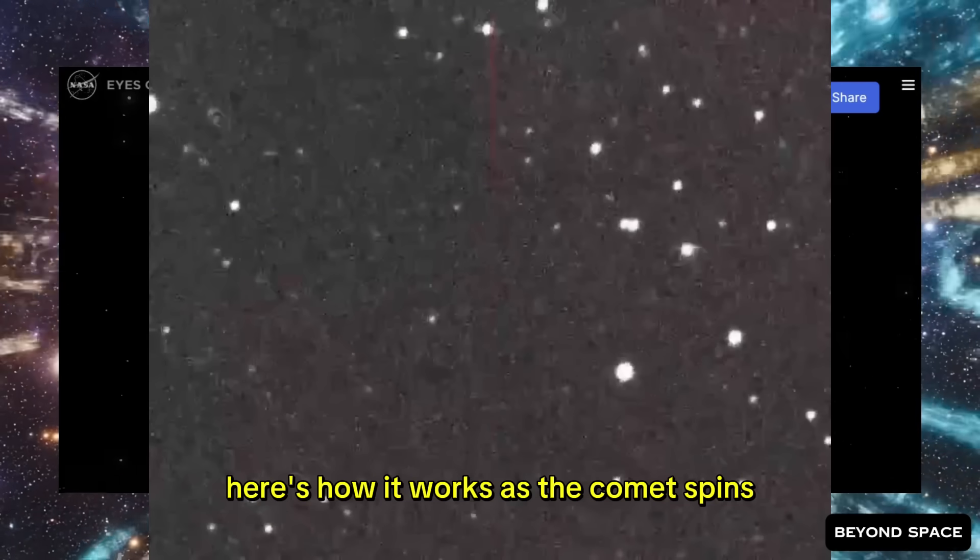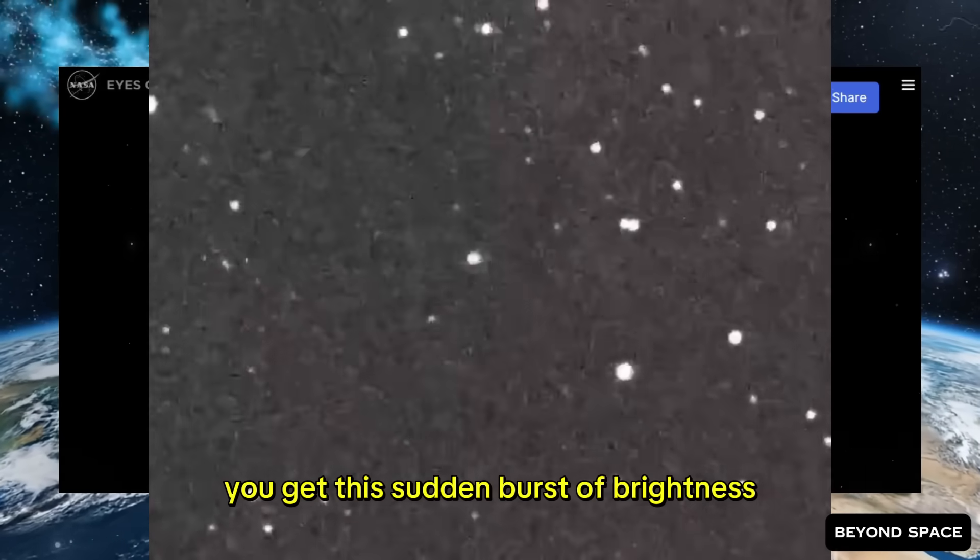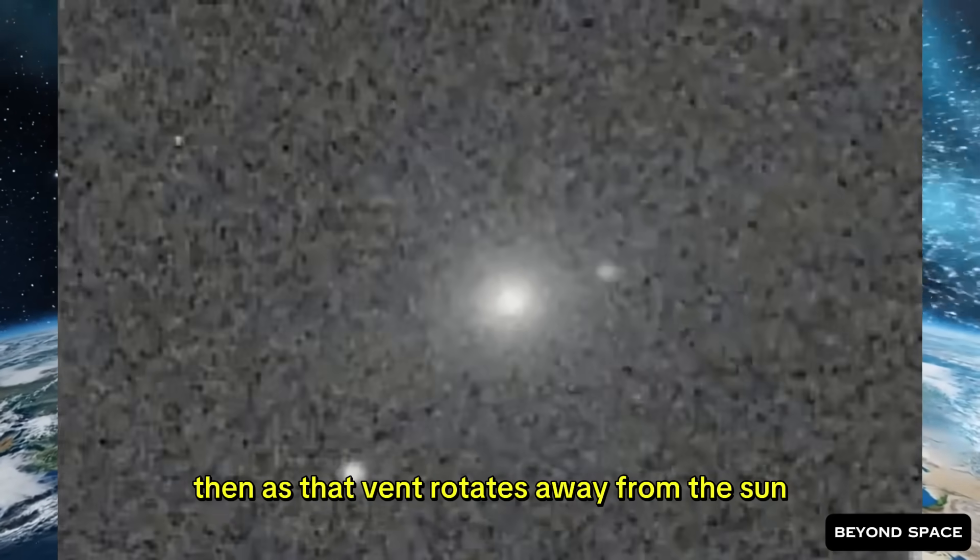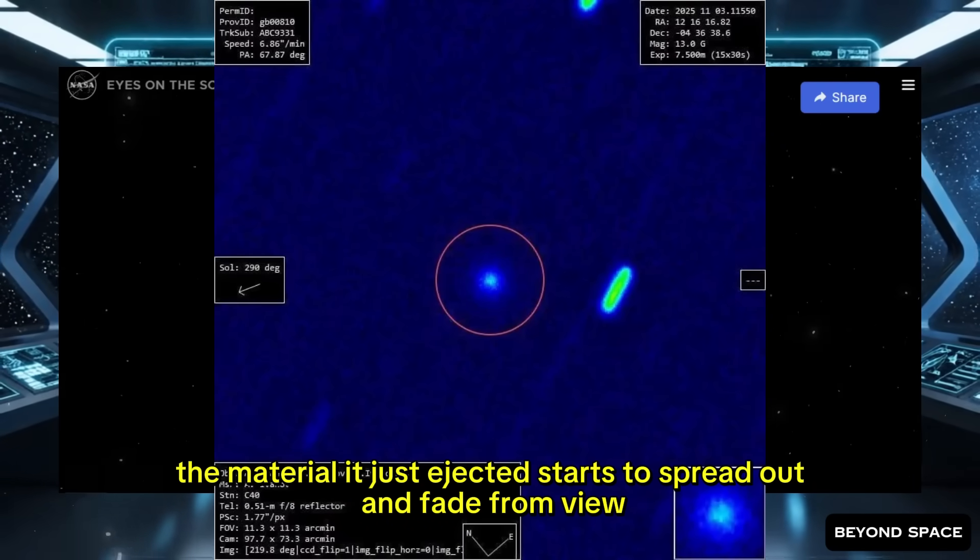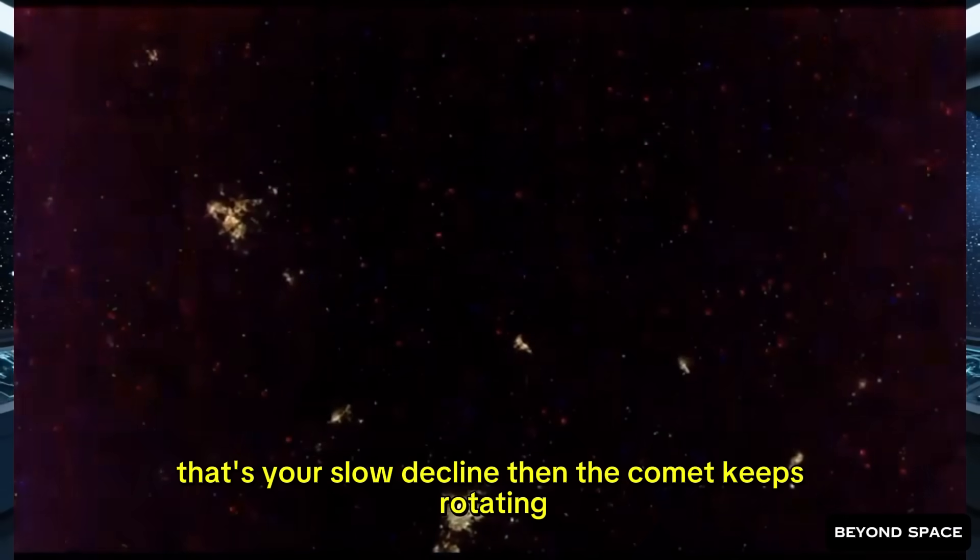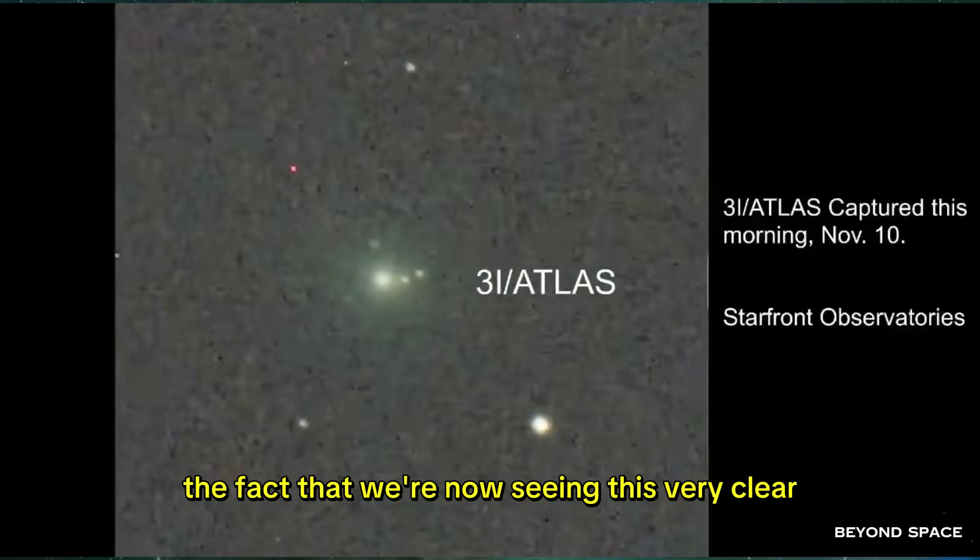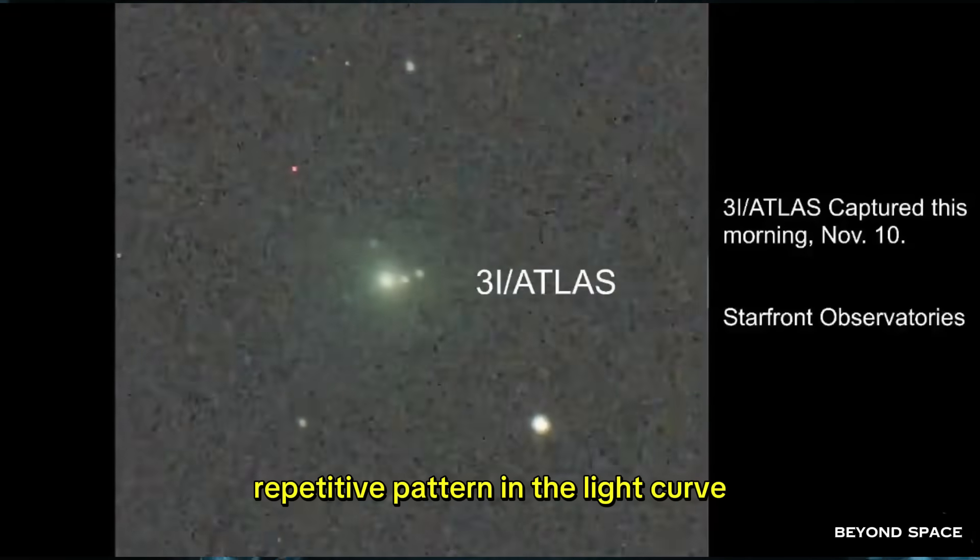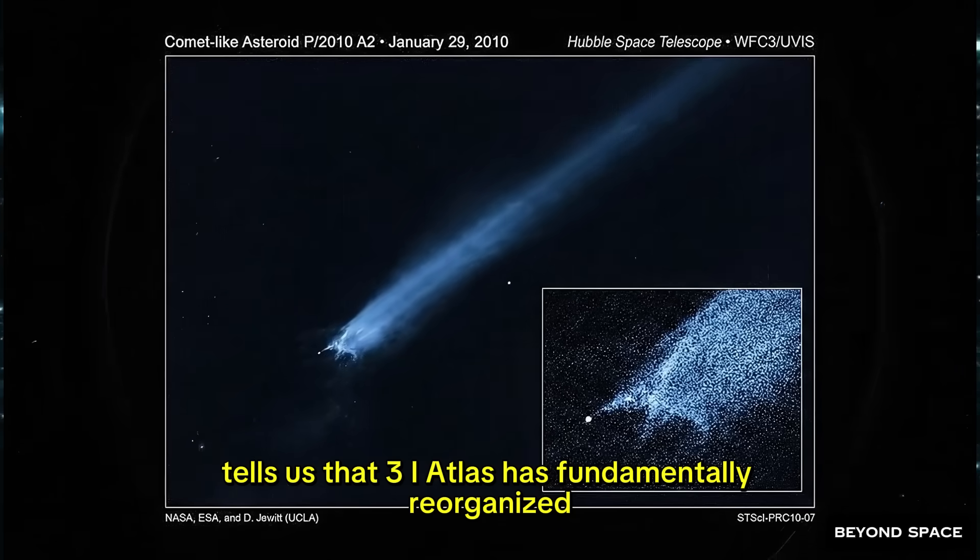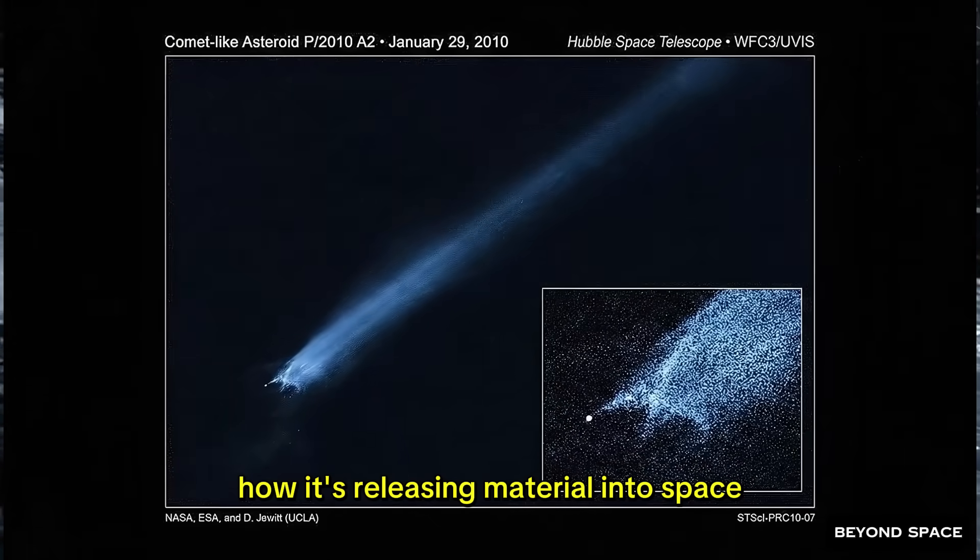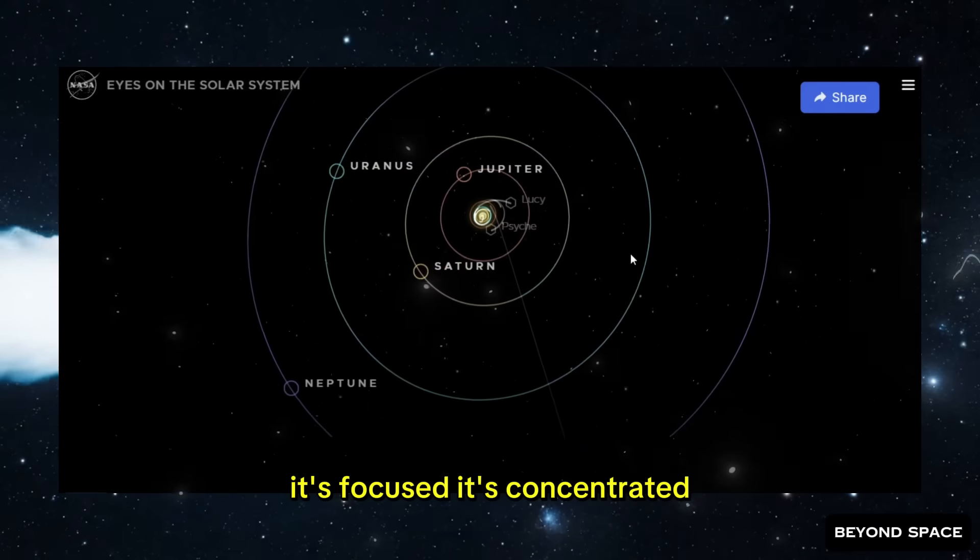Here's how it works. As the comet spins, one of these active vents rotates into sunlight. When that happens, it flares up quickly. You get this sudden burst of brightness. Then, as that vent rotates away from the sun, the material it just ejected starts to spread out and fade from view. That's your slow decline. Then the comet keeps rotating, the next vent swings into sunlight, and boom, another spike. The fact that we're now seeing this very clear, repetitive pattern in the light curve, combined with those two visible plumes in the images, tells us that 3-Eye Atlas has fundamentally reorganized how it's releasing material into space. It's not doing this diffuse, all-over-the-surface kind of outgassing anymore. It's focused. It's concentrated. It's shooting jets from specific locations on the nucleus.